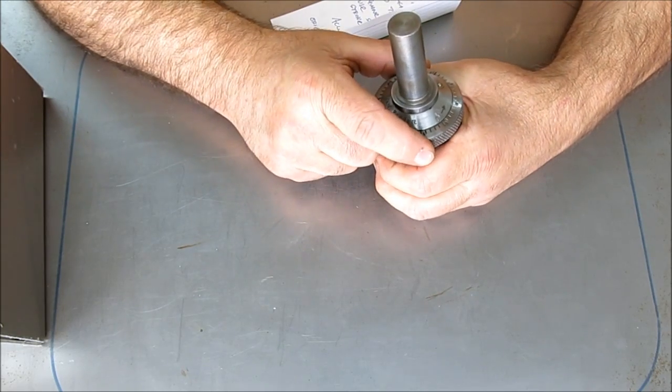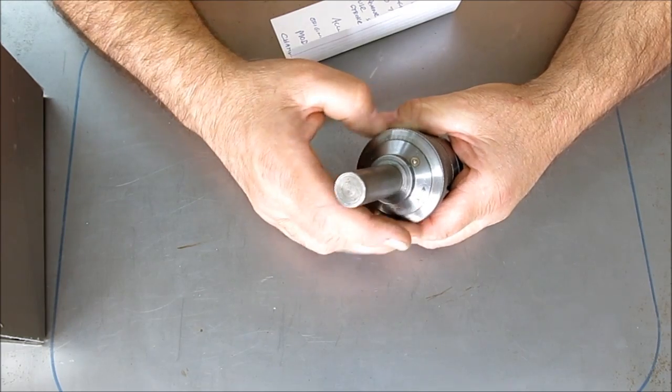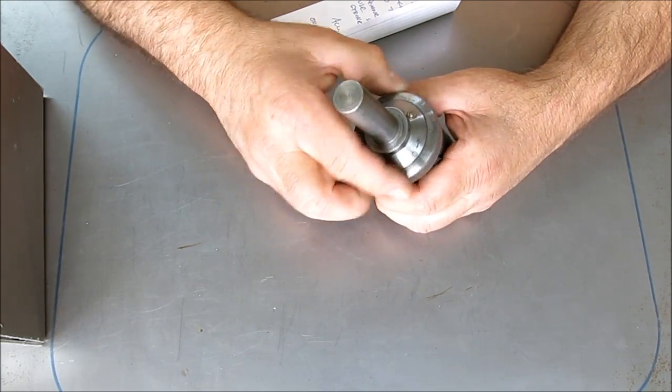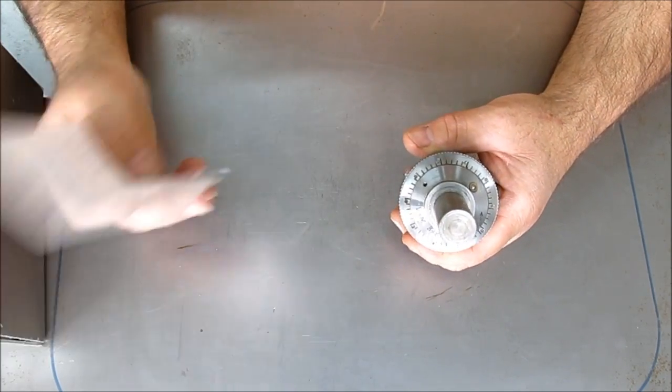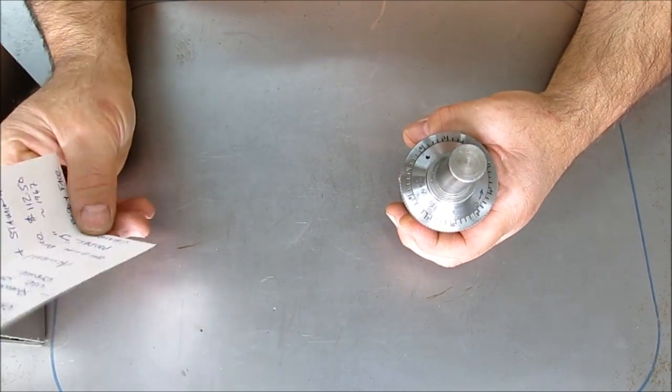That's one ten thousandths on the diameter per division. If you start at zero and you move that one, that's a ten thousandths on the board. Now, in practical purposes, it's not quite that sensitive. One rotation, one full rotation of this ring changes the diameter five thousandths.